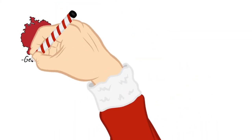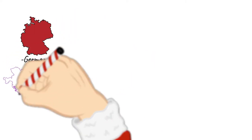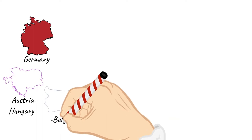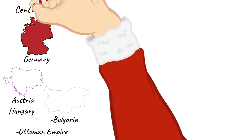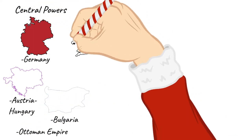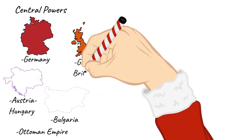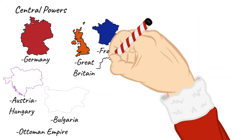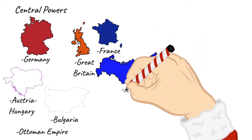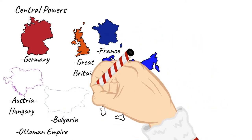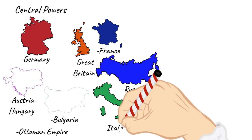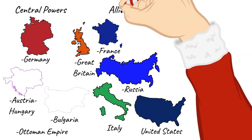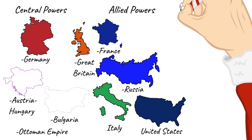Remember from last week, we talked about the specific countries that were involved: Germany, Austria-Hungary, Bulgaria, and the Ottoman Empire on the Central Powers side, and Great Britain, France, Russia, Italy, and the United States eventually on the Allied Powers side.